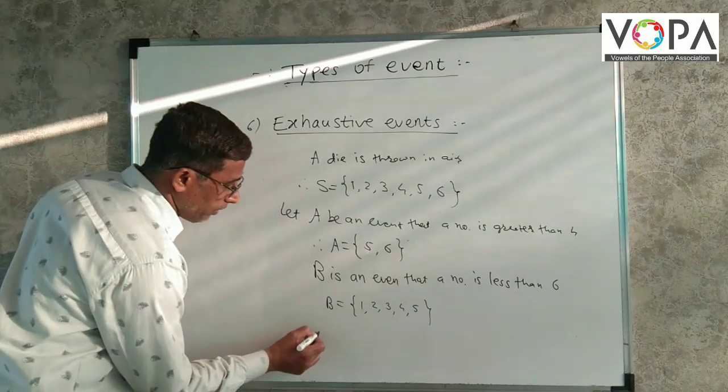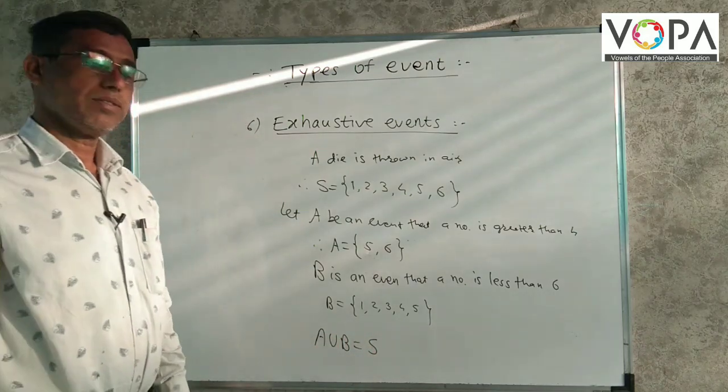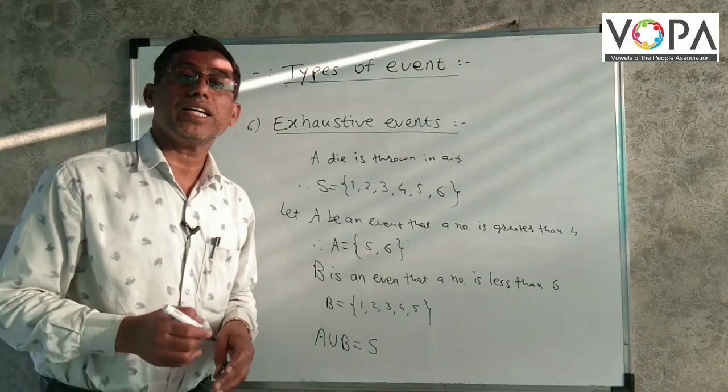Therefore, A union B is equal to S. So, such type of events is the exhaustive events.